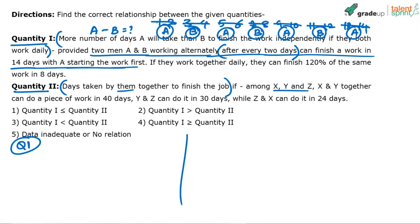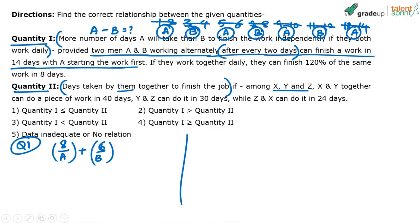Out of 14 days, A contributed eight days and B contributed six days, and together they finished the work. A's daily capacity is 1/a, B's is 1/b. So the first equation is: 8/a + 6/b = 1.